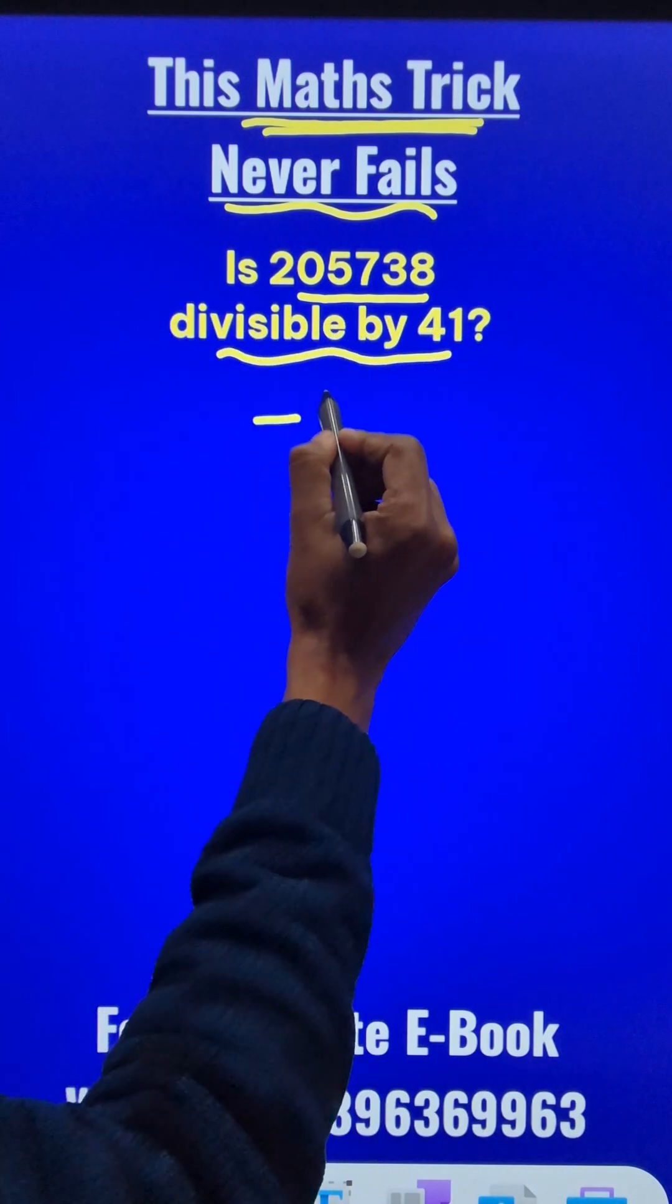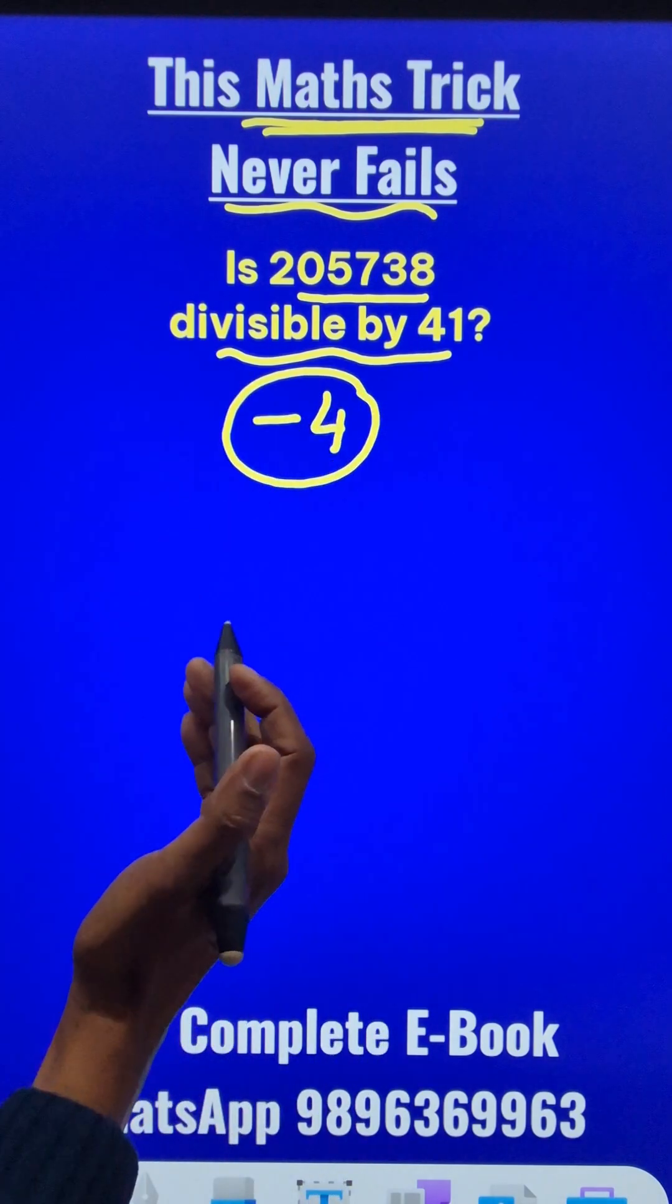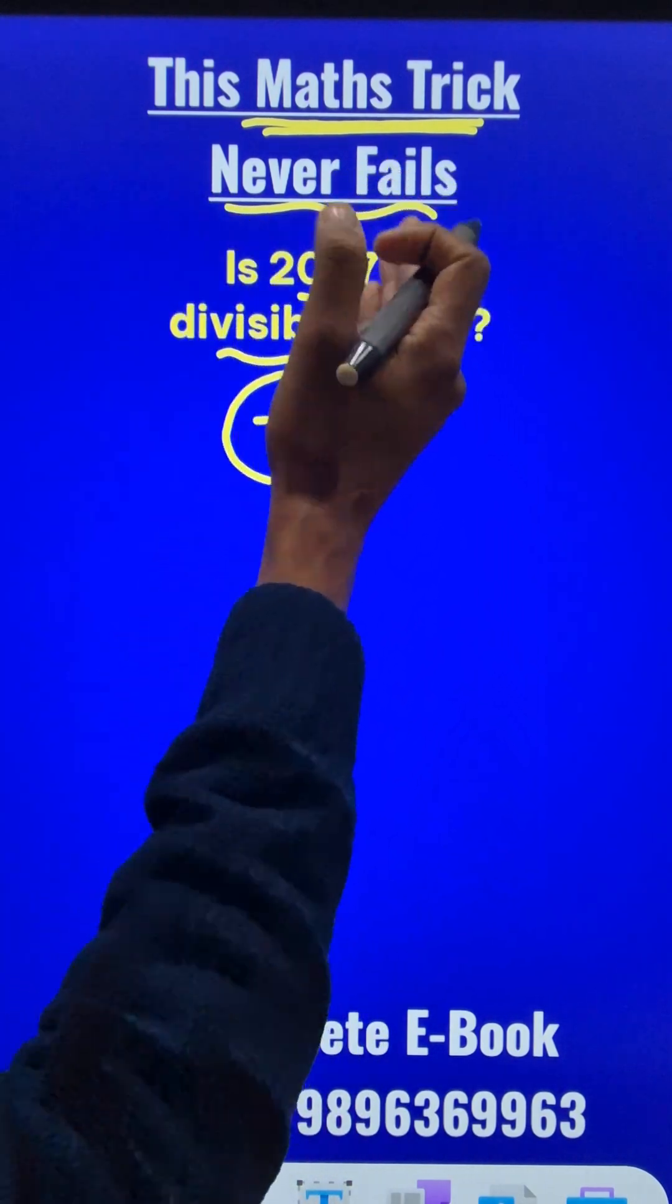Remember the number negative 4. This is called the oscillator when we have to check divisibility of any number by 41.